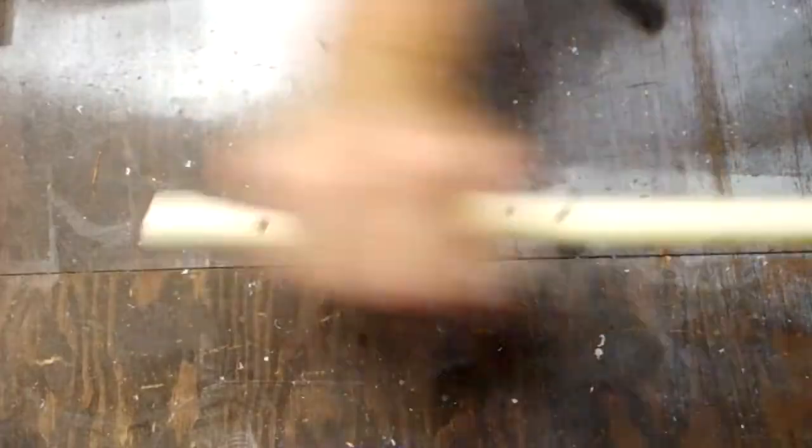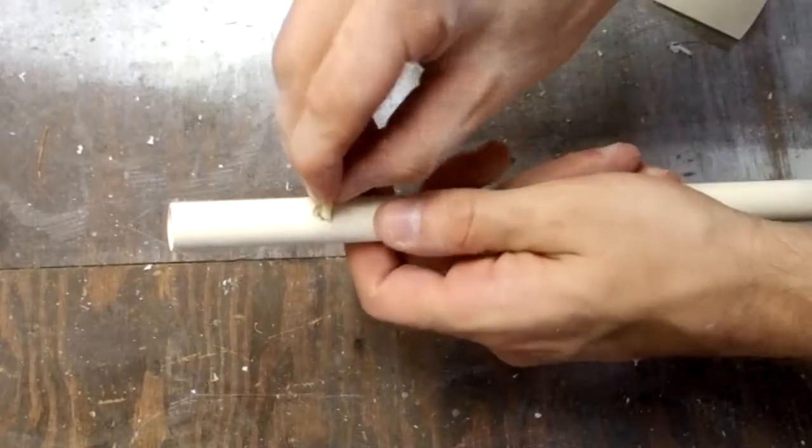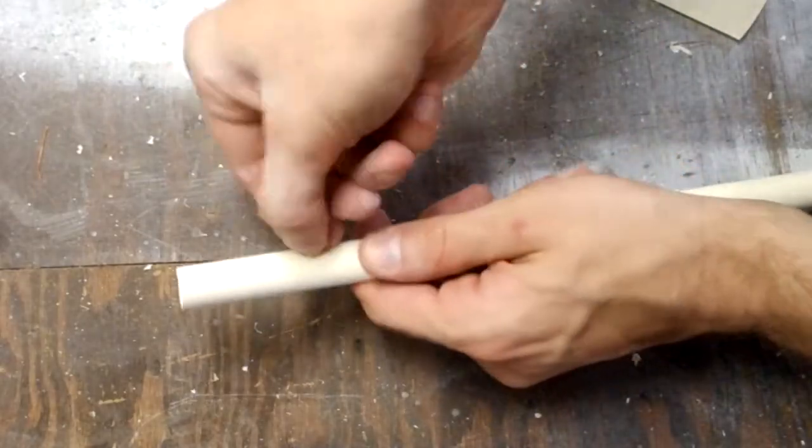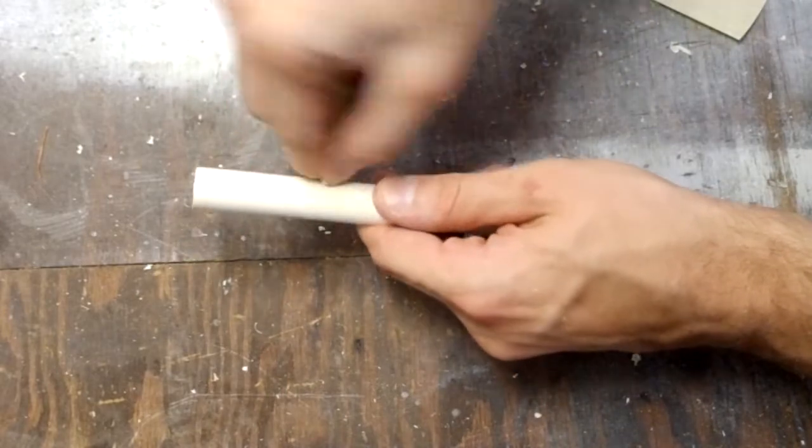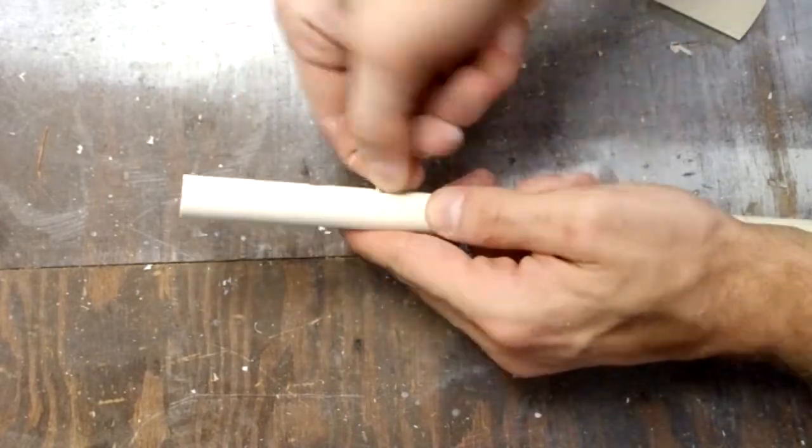So next we'll sand the body down to get rid of all these marks. And then we'll sand out the holes. Be careful not to take off too much or you'll throw off the tuning. And that's all there is to it.